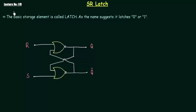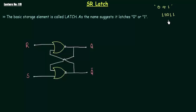Welcome to lecture number 119 in digital electronics course. In the last presentation I explained the basics of sequential circuits — the only difference between combinational circuits and sequential circuits is the memory block. In sequential circuits we have a memory element used to store the past output. Our prime aim is to store 0 or 1, a single bit, and for this purpose we use a circuit called a latch.